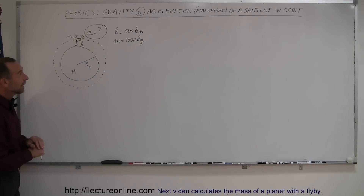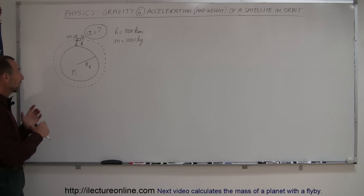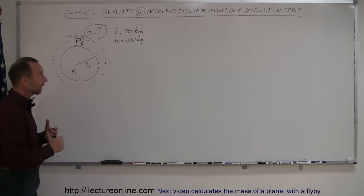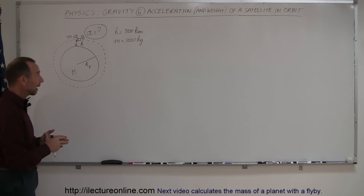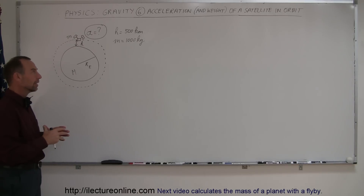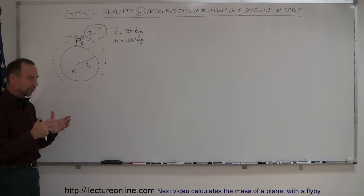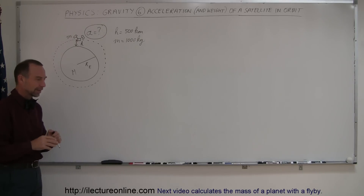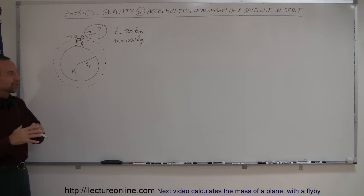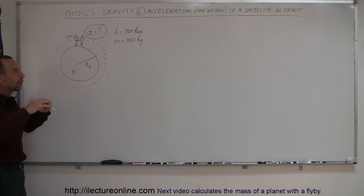Our next topic in gravity is looking at a satellite in orbit around the Earth — whether that satellite experiences acceleration due to gravity and whether it has weight. When we look at pictures or film footage of astronauts in orbit around the Earth, they all seem to be weightless. They all seem to float in space.